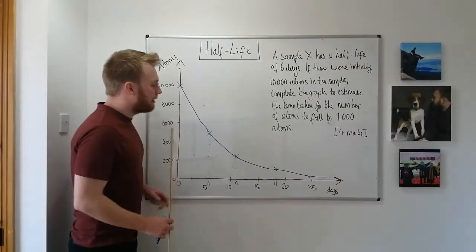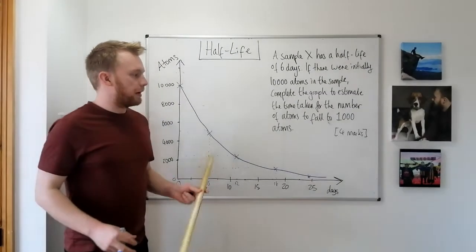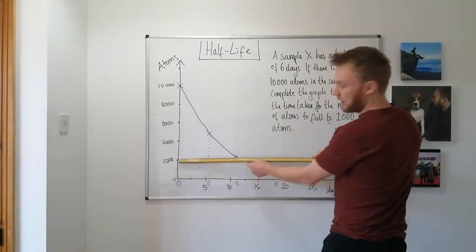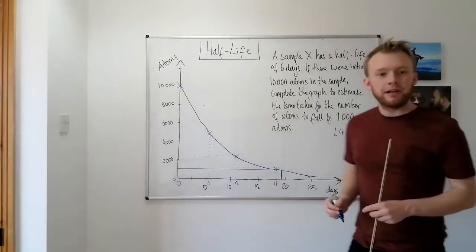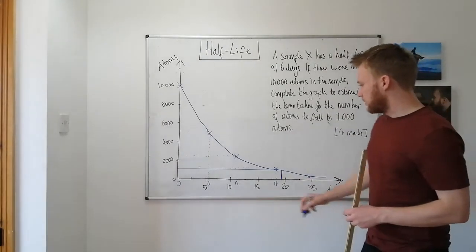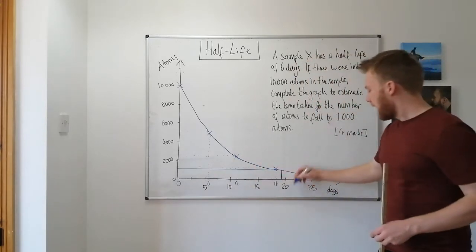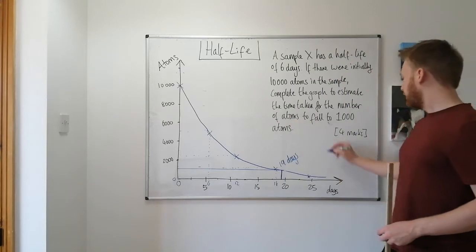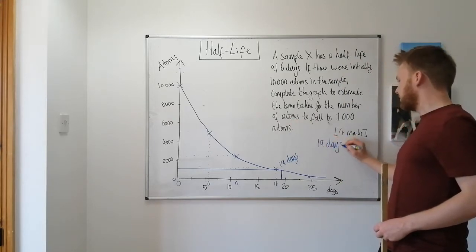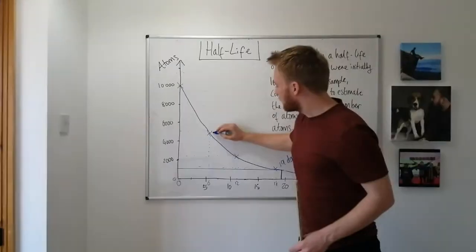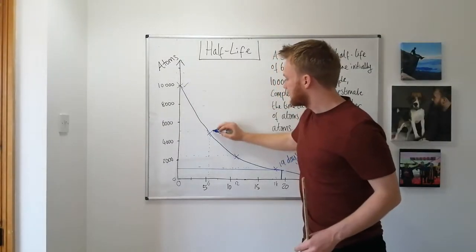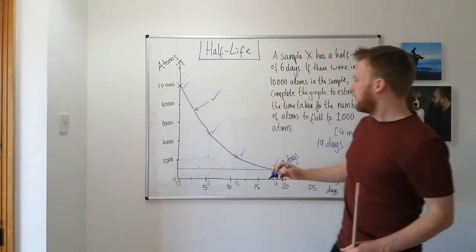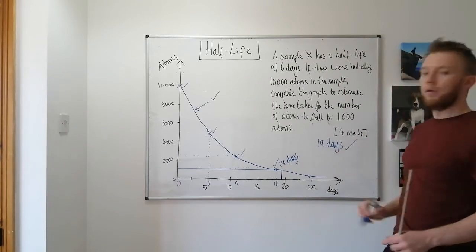I want to know how long it took for the number of atoms to fall below 1,000. So I draw a line across from 1,000 — which is halfway between 0 and 2,000 on the axis — across to the curve, then down to the time axis. According to my graph, we reach 1,000 atoms at 19 days. That's my answer. I pick up two marks for accurate points, a third for the line of best fit, and a fourth for the answer.